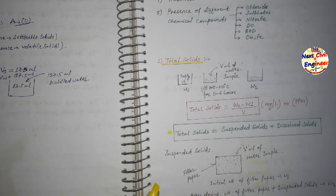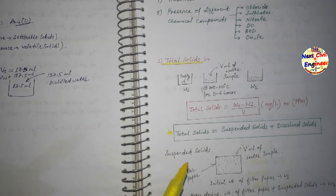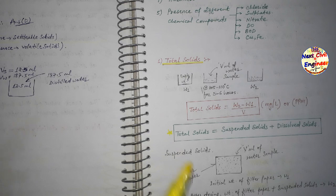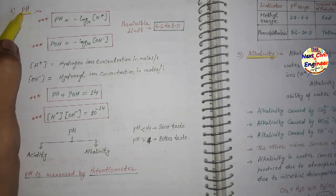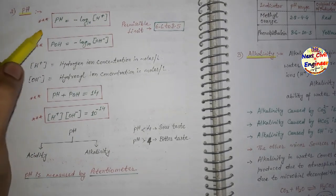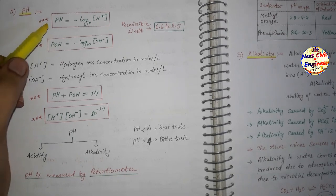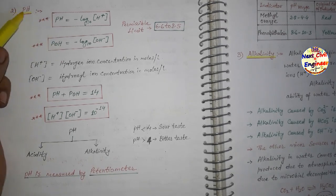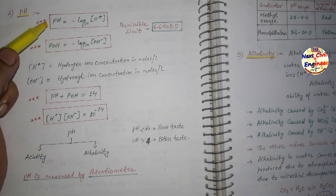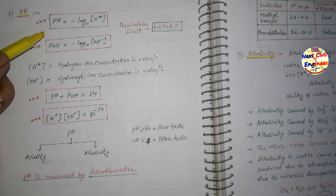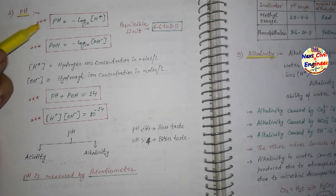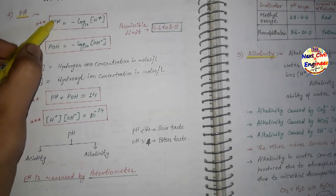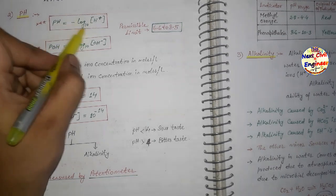Let's move on to the next chemical parameter: pH. pH is a very basic term that all of us have come across in chemistry lab in Class 11-12 as well as in engineering. The formula for pH is: pH = −log[H⁺], where H⁺ is the hydrogen ion concentration. We will go from zero level to a high level and also solve previous year exam questions.